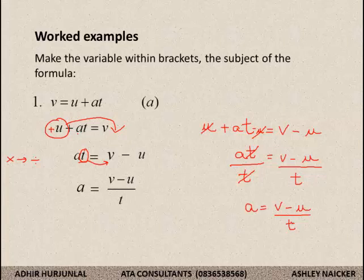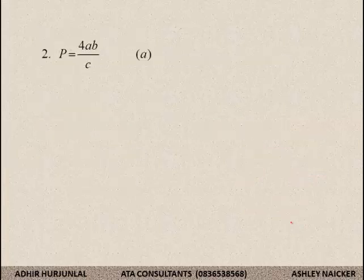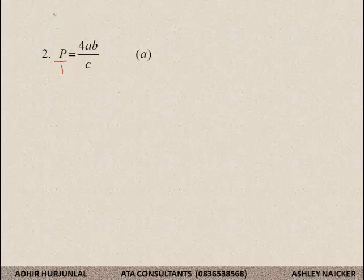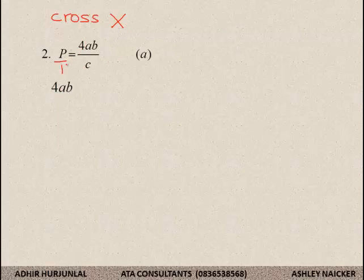Exactly the same result. Whichever method you are more comfortable with. Let us go further. Example number 2: p is equal to 4ab over c. The question is: simplify for a. Whenever I see any fractional component, remember that p is in fact p over 1. Because I see this fractional component, I need to use a very simple rule and cross multiply. Cross multiply: 4ab multiplied by 1 is 4ab, which is equal to p times c, which is pc.